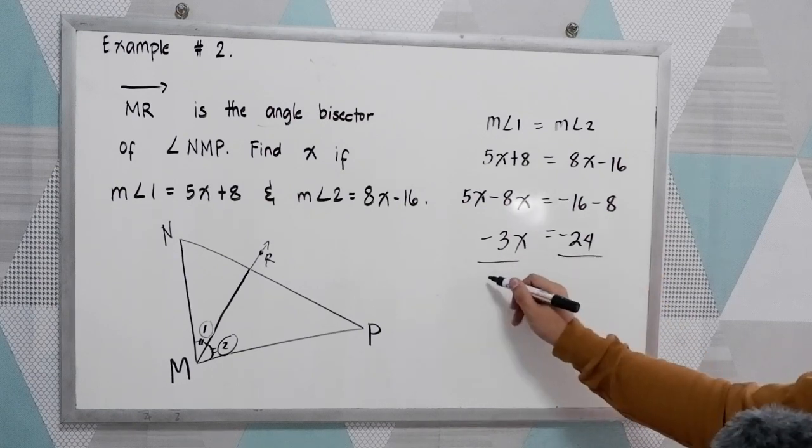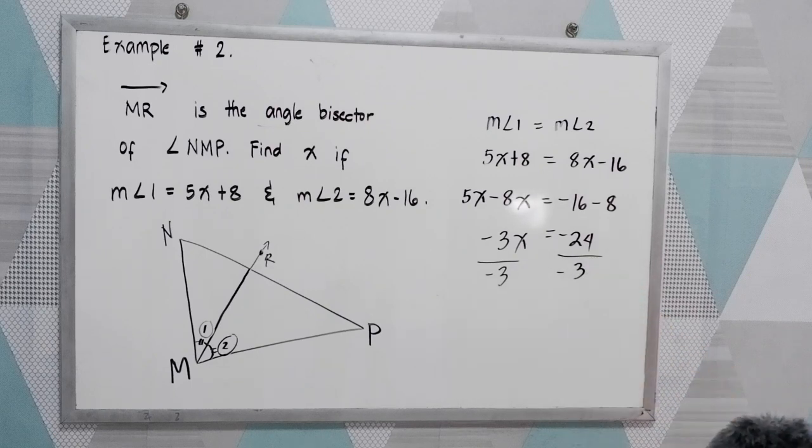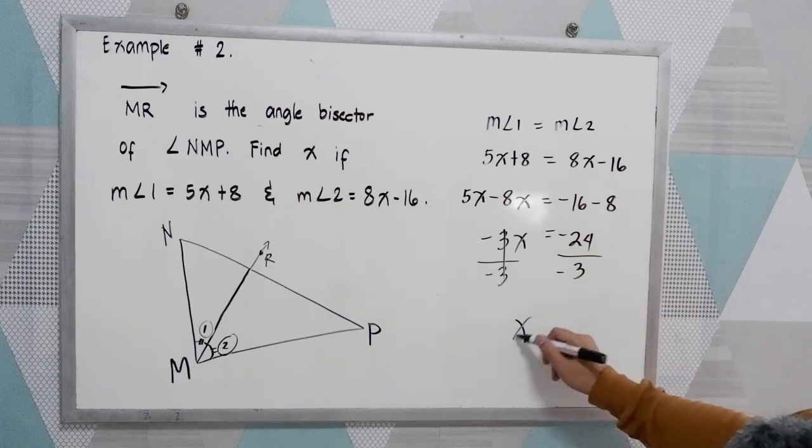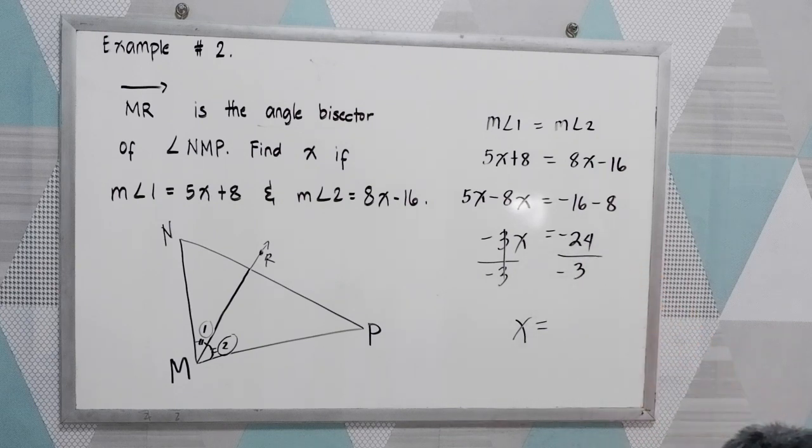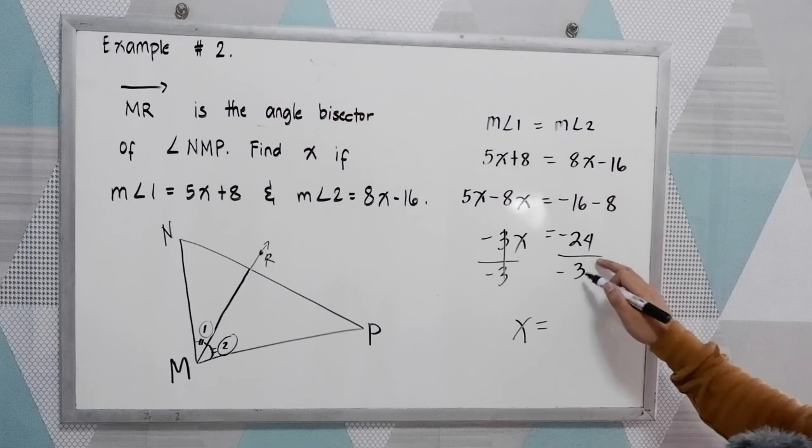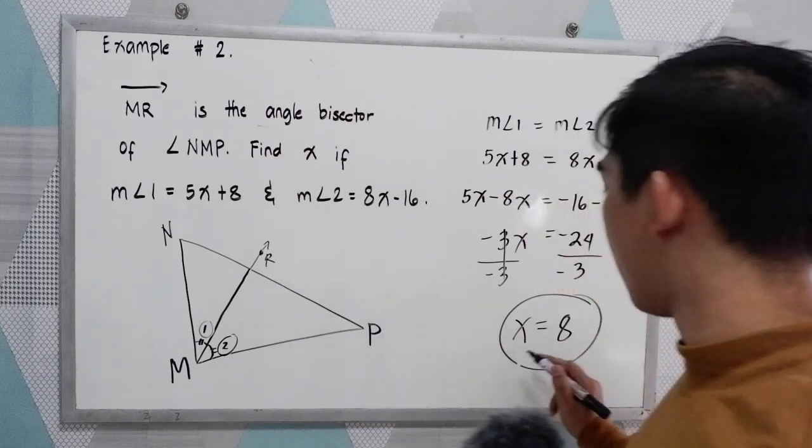Now to get X, we need to divide by negative 3. Finally, X is equal to negative 24 divided by negative 3. Negative divided by negative, that is positive. 24 divided by 3 is 8. So the value of X is equal to 8.